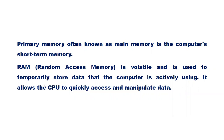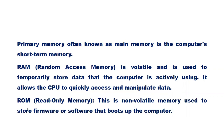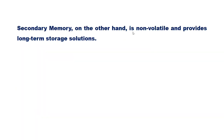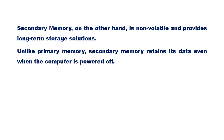RAM is used to temporarily store data that the computer is actively using, allowing the CPU to quickly access and manipulate that data. ROM, or read-only memory, is non-volatile memory used to store firmware or software that boots up the computer. Secondary memory, on the other hand, is non-volatile and provides long-term storage solutions, retaining its data even when the computer is powered off.